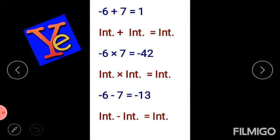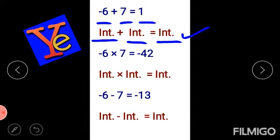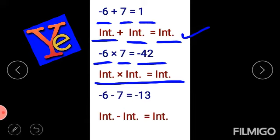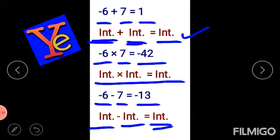Next, I have taken minus 6 plus 7, and I am getting 1. Minus 6 is an integer, 7 is also an integer, and after addition I get an integer. When I multiply: minus 6 multiplied by 7 gives minus 42, which is an integer. When I subtract: minus 6 minus 7 gives minus 13, again an integer. So integer operation integer gives integer — just like milk plus milk gives milk. Integers are closed under addition, multiplication, and subtraction.